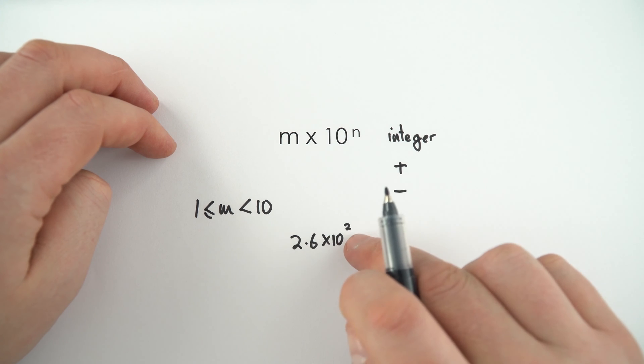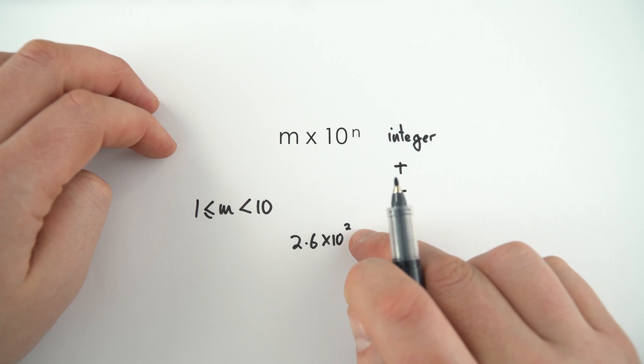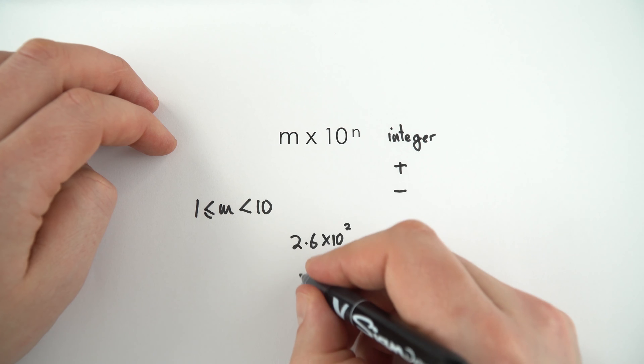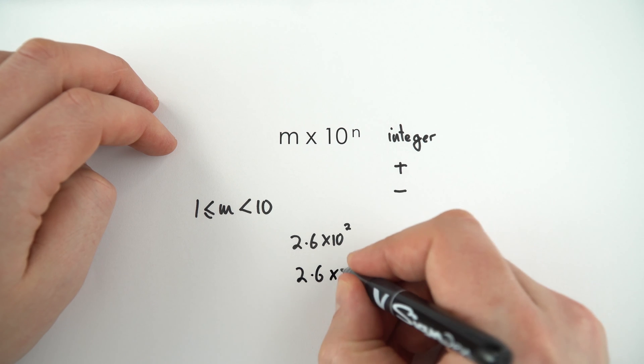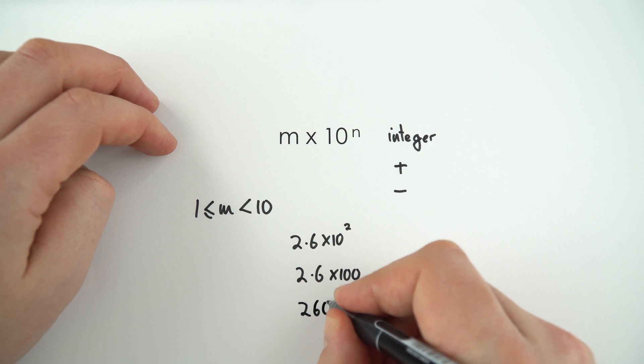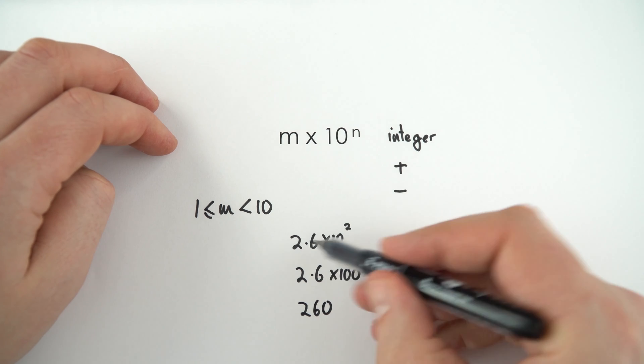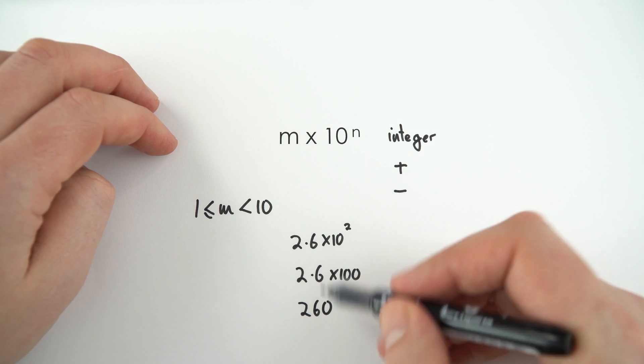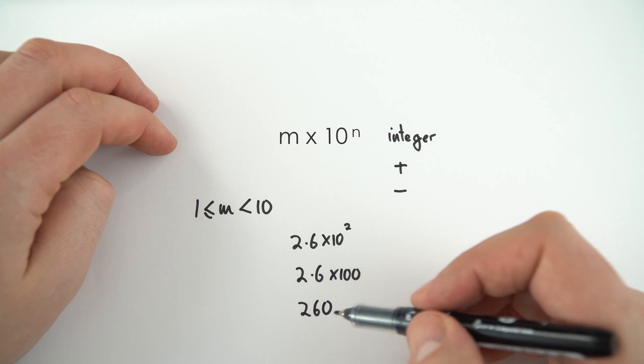Now this is the same 10 to the power of 2 as 10 squared, which is 100. So 2.6 times 100, and 2.6 times 100 is 260. So 2.6 times 10 to the 2 is just another way of writing the number 260.